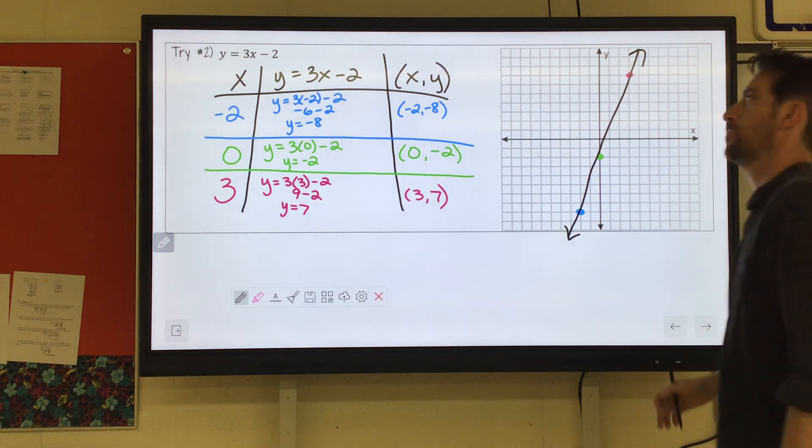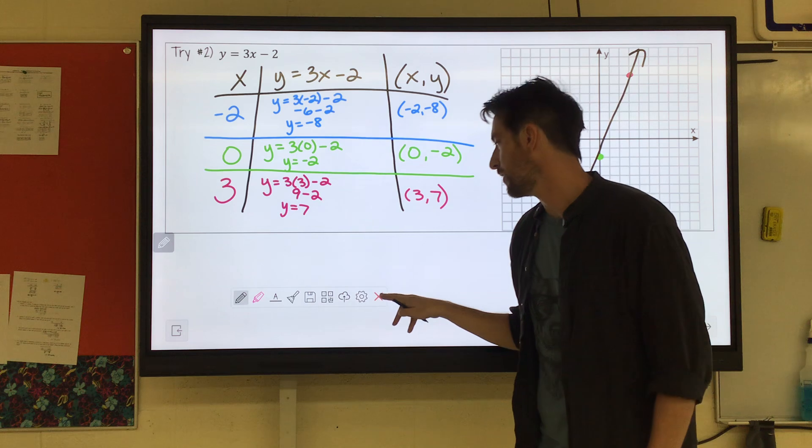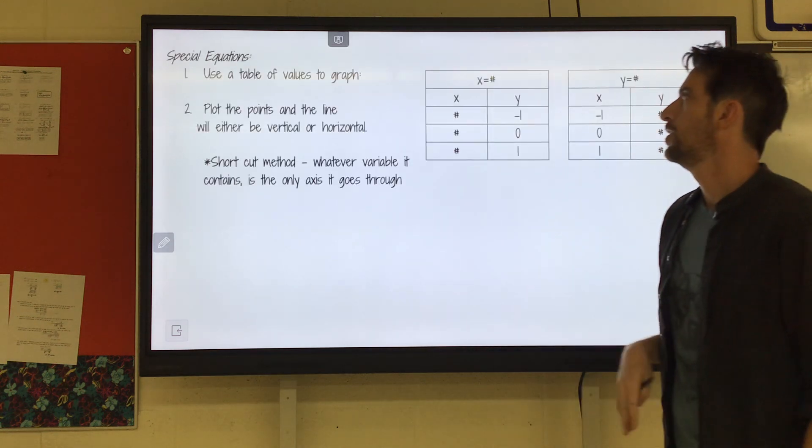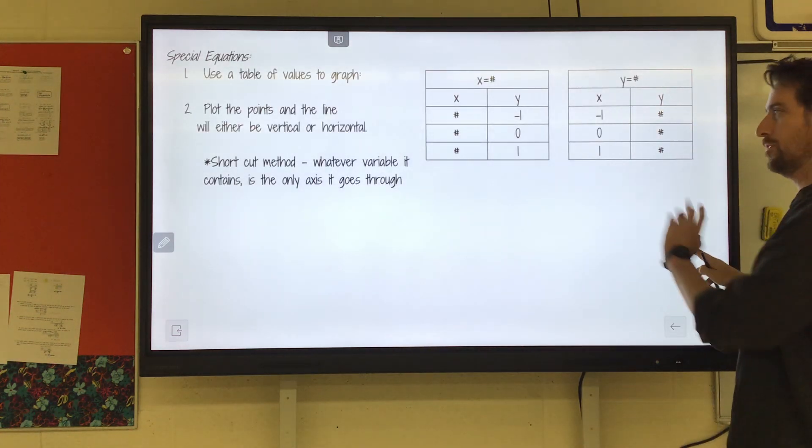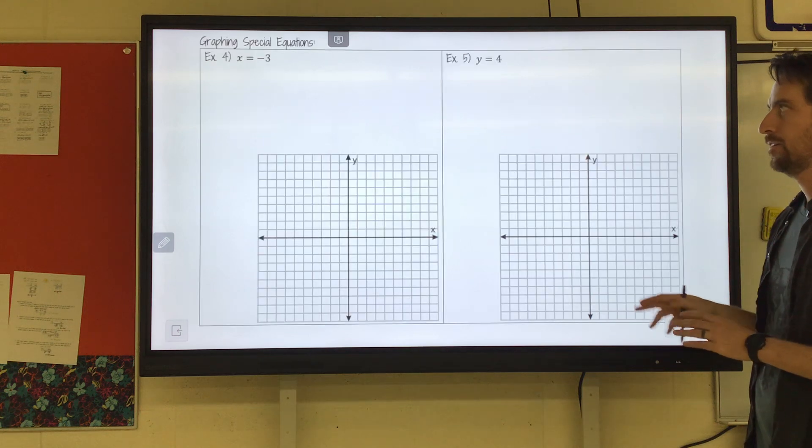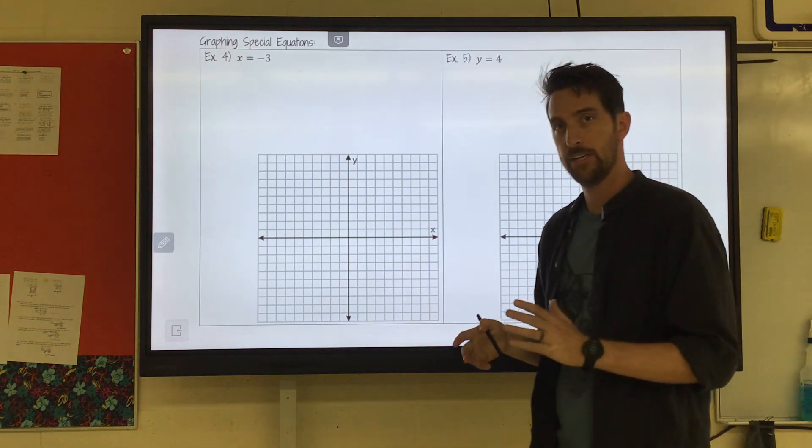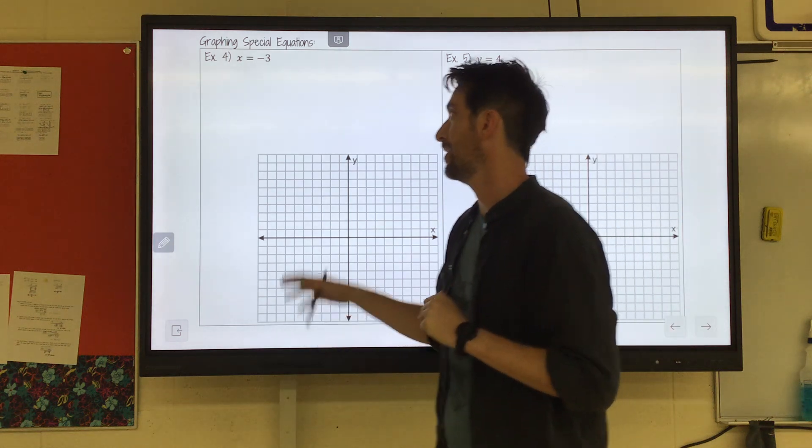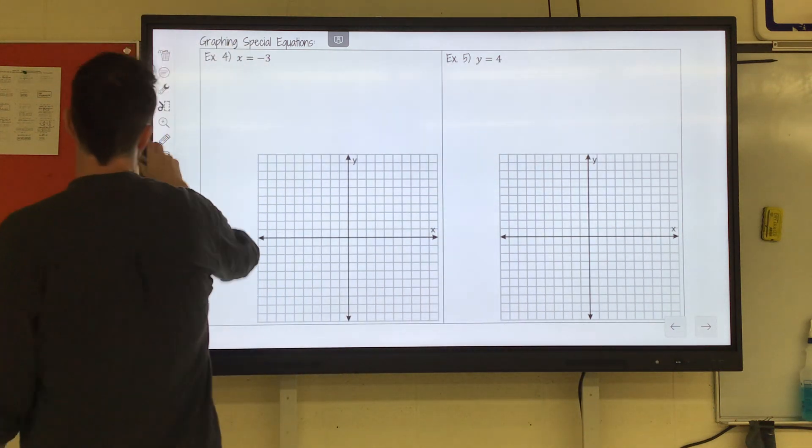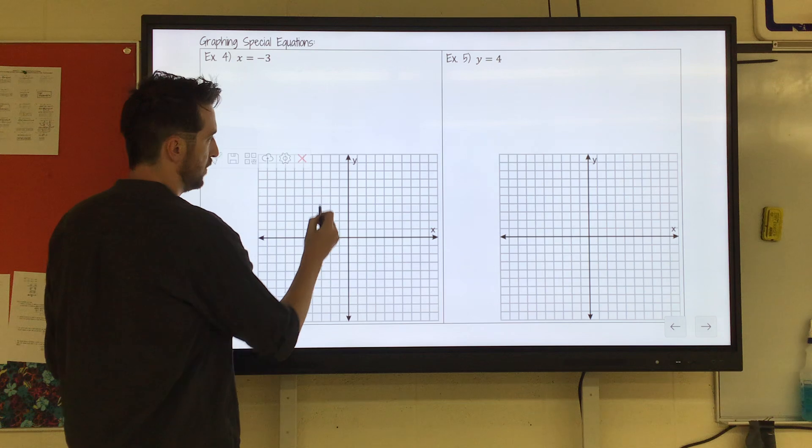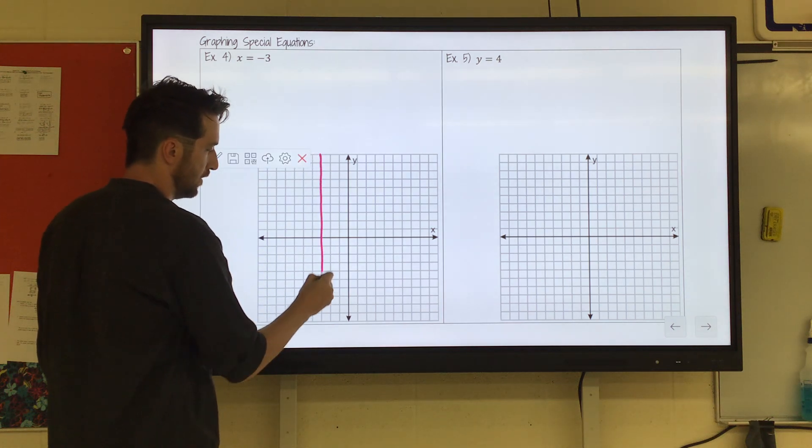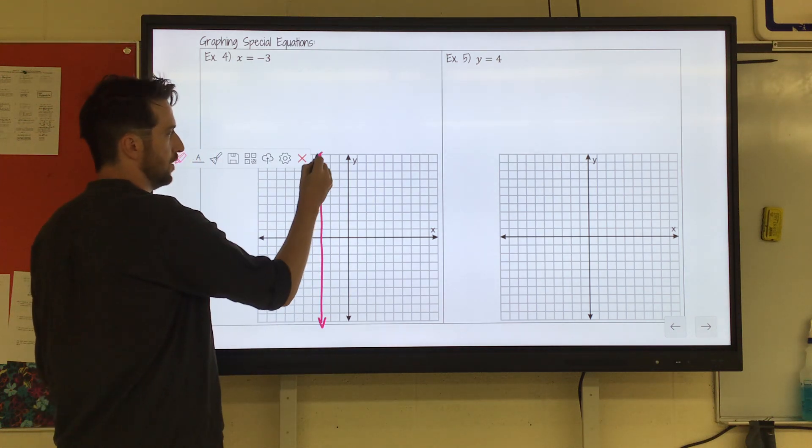All right, now we're going to talk about maybe some weird scenarios that might show up. Here's the deal. If it is x equals some number, it's just going to be a vertical line at that number. So this says x equals negative 3. That's just going to be a vertical line at negative 3. That's it.